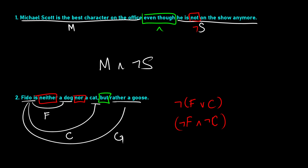The next bit: 'but rather a goose.' BUT is another contrast word, but it has the same meaning as AND, so 'but rather a goose' would be AND G. So we have two different ways of translating this sentence: NOT (F OR C) AND G, or NOT F AND NOT C AND G. Both of those have the same meaning. The more challenging part is the 'neither...nor' because there are two different ways to translate that.